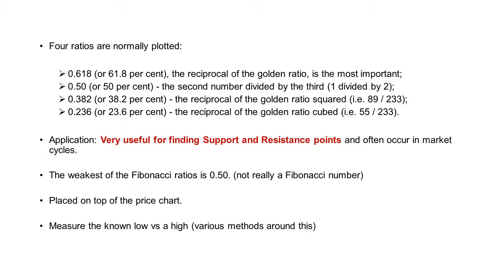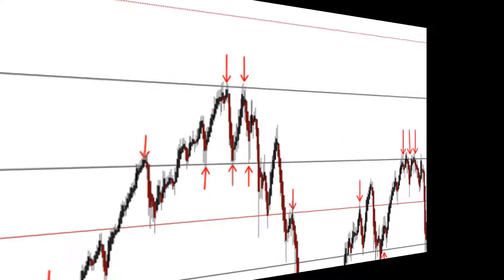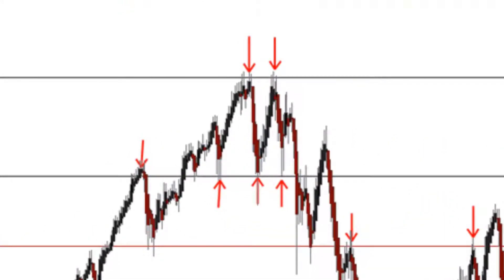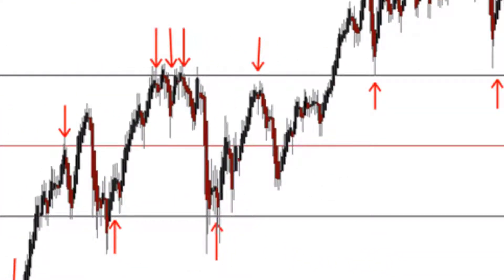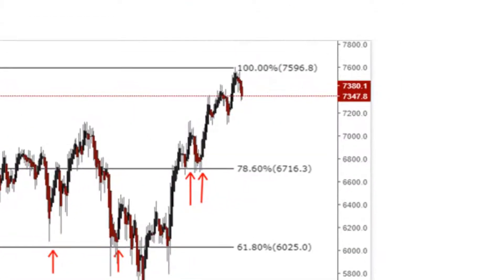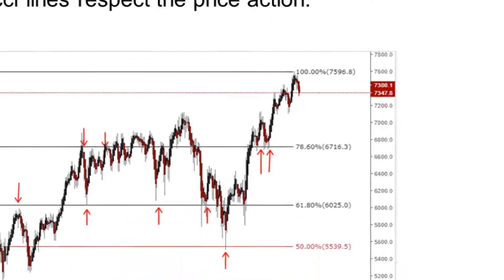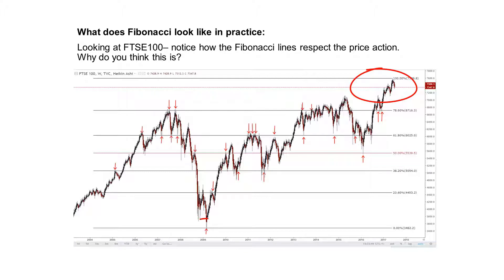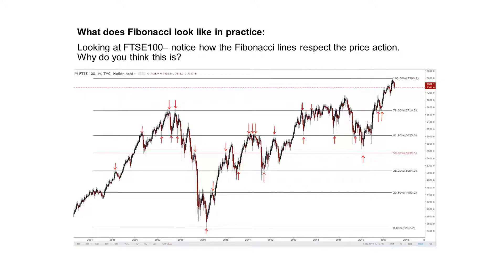It is a great tool for finding support and resistance points, which makes it very good for risk management and trade management. It's placed on top of the price chart and all you need to know is where the low and high are. This is the discretionary side of Fibonacci, but everyone's doing the same sort of thing. Here on the FTSE 100, the arrows are around the points of Fibonacci lines and the price just keeps bouncing to and fro around these lines, proving that the Fibonacci lines work.